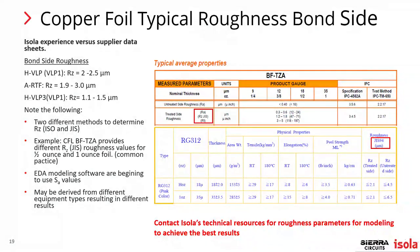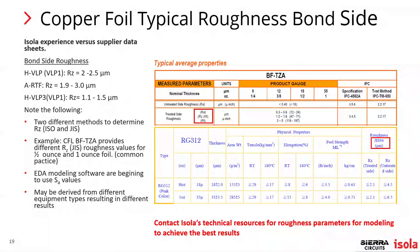HVLP3 is the standard foil used today — if you're doing anything in AI, you're probably using that foil. HVLP4 is in development and we're going to see migration into that type of copper foil in the near future. When looking at data sheets, for example Isola's standard VLP2-type copper shared from Circuit Foil, this demonstrates they use the JIS method for measuring surface roughness. There's also the ISO standard RZ method — keep in mind that RZ is a single line measurement versus a surface area measurement number.